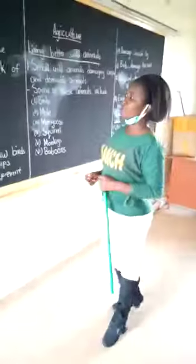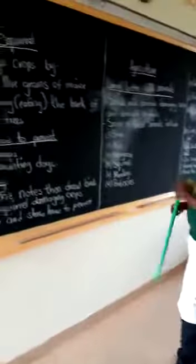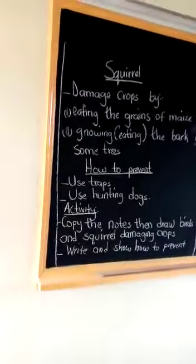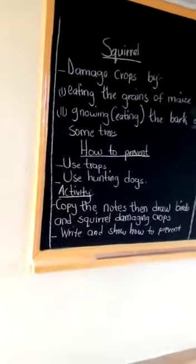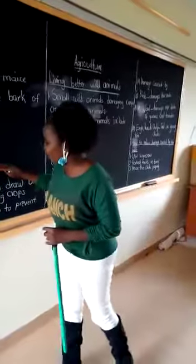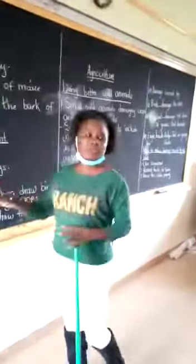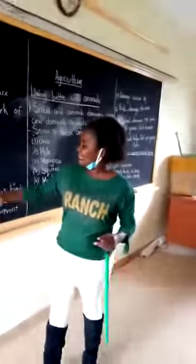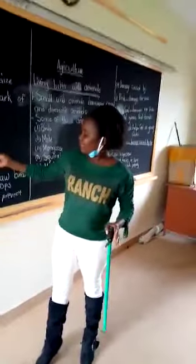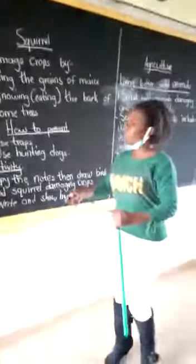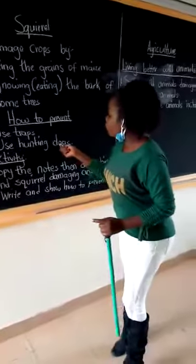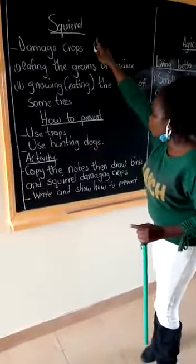Now, how are we going to prevent the damage done by the squirrel? You are going to use traps and use hunting dogs. And this is done well by the boys, especially when they are taking our cows for grazing — they always go with dogs. Those dogs, you will use them to hunt squirrel.